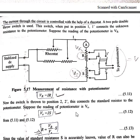The accuracy of this method depends on the assumption that there is no change in the value of current when the two different measurements are taken. We take I as constant — this is the most important assumption. Therefore, a stable DC supply is absolutely necessary. The difficulty of ensuring this condition is the chief disadvantage of this method, because any disturbance in current I will cause the ratio to be incorrect.